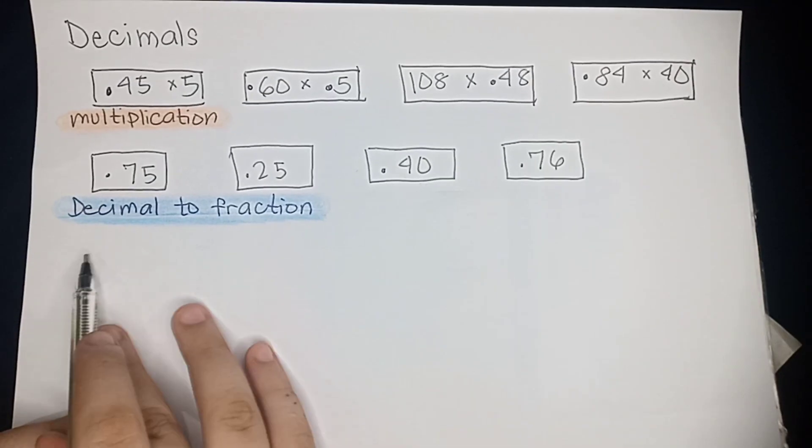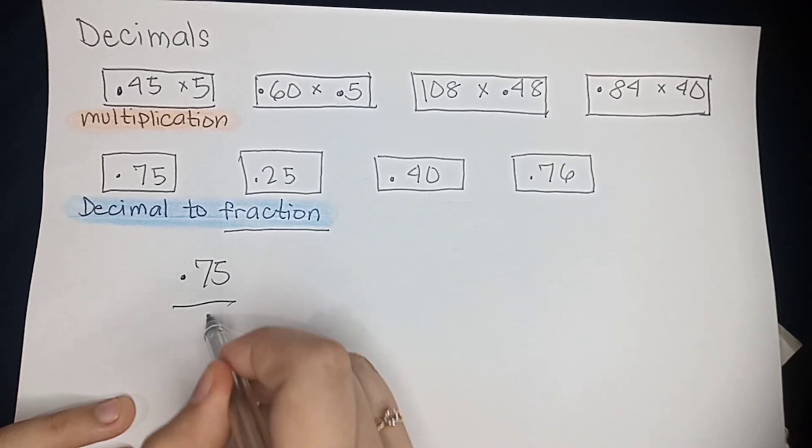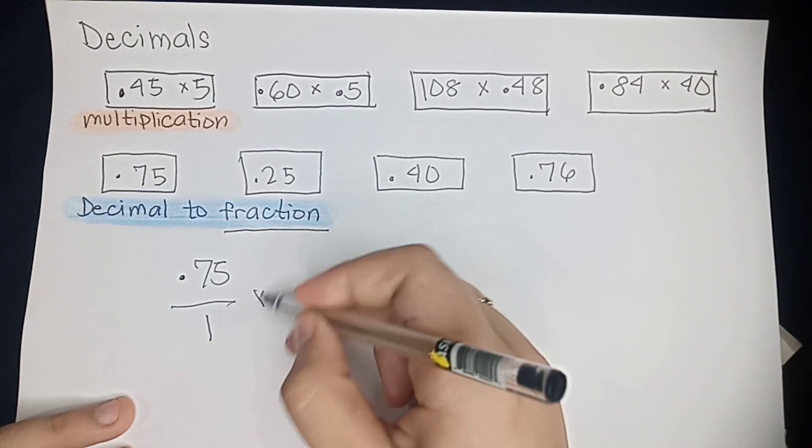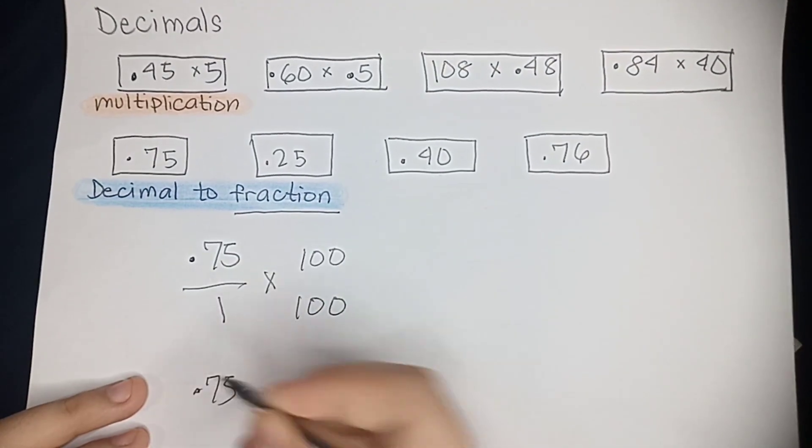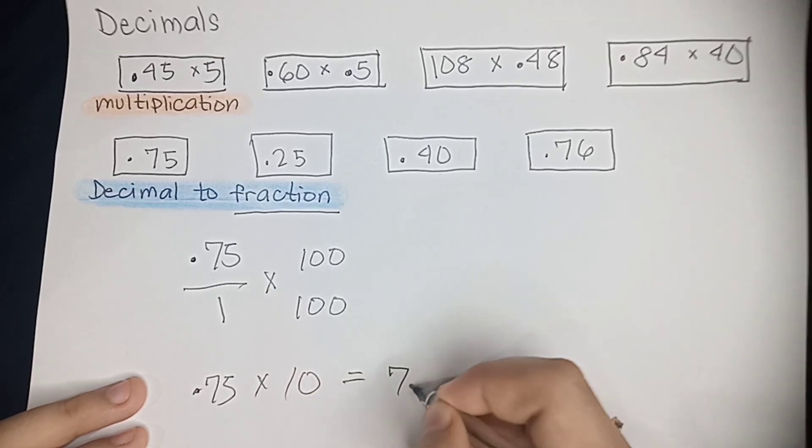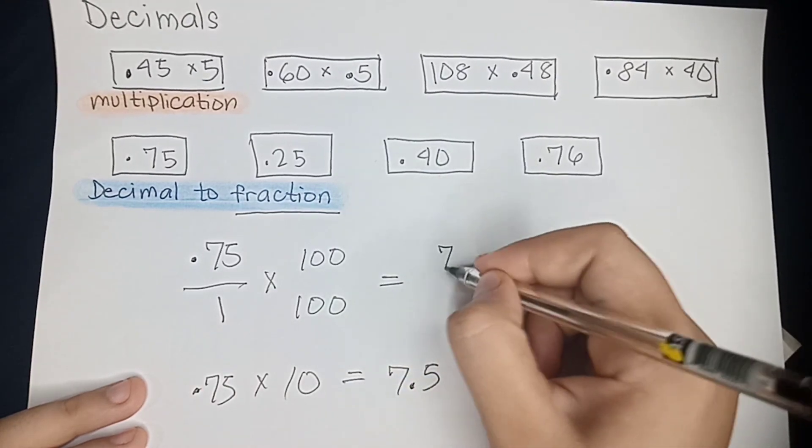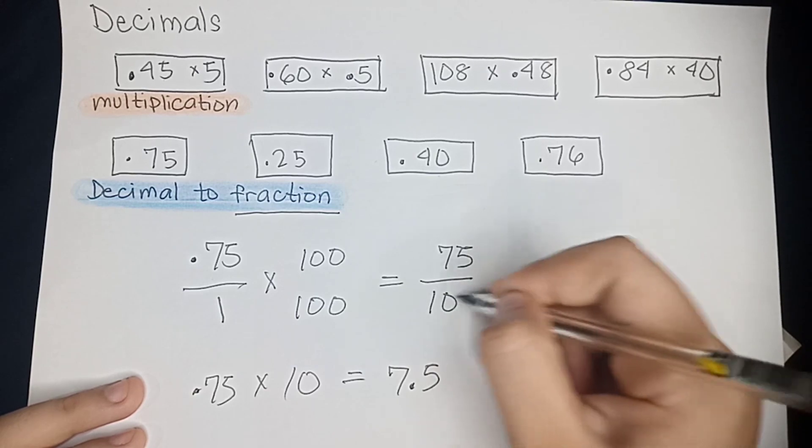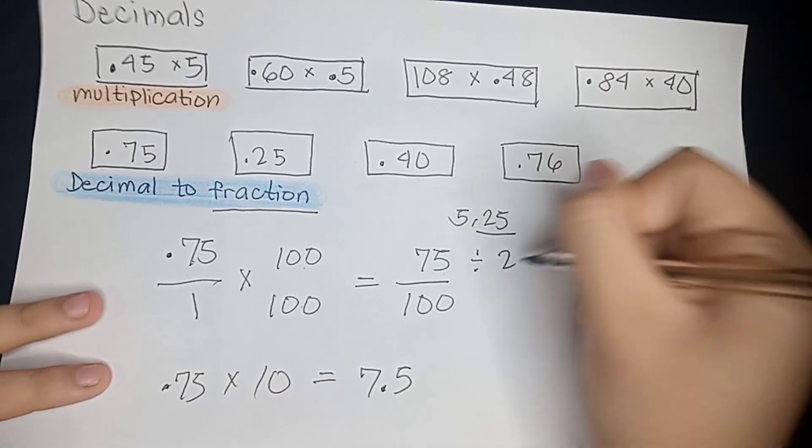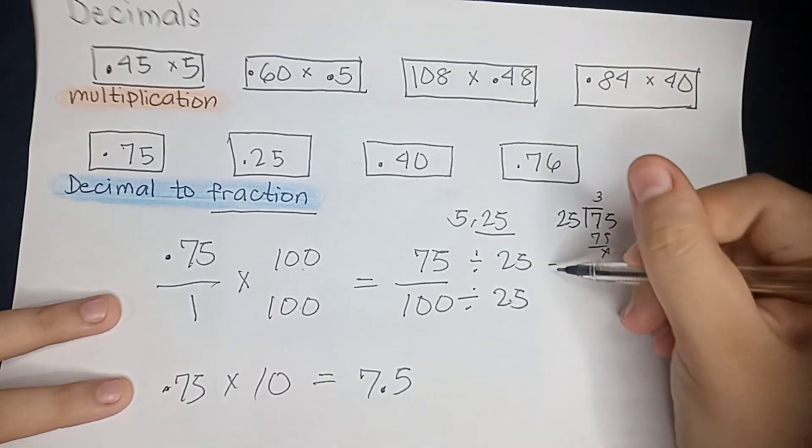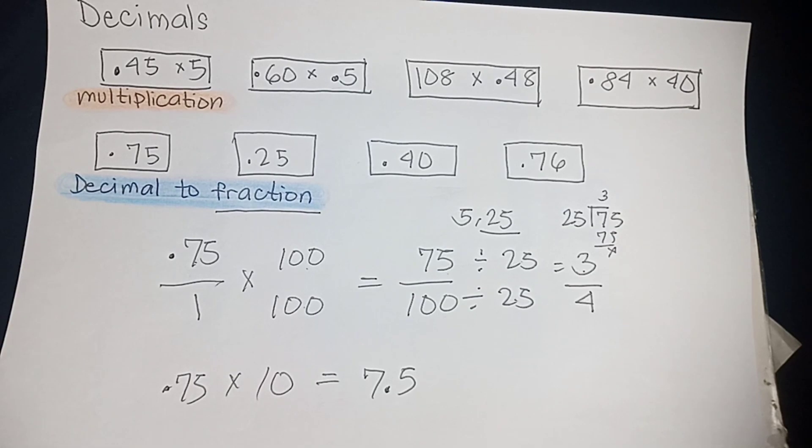So now we're going to learn how to change a decimal to a fraction. So now we're going to change 0.75 into a fraction. And remember, every number is over 1. So we're going to multiply both sides by 100. Why 100? Because if you multiply 0.75 by 10, you'll just get 7.5, and we can't work with that. So now we're just going to multiply 0.75 by 100, which makes 75, and 1 by 100, which is 100. Now we're going to find the greatest common factor, which is 25, and divide it by both 75 and 100. 75 divided by 25 equals 3, and 100 divided by 25 equals 4. And the answer is 3 fourths.